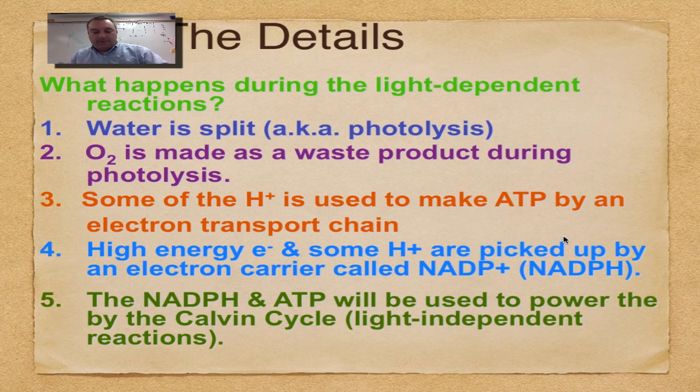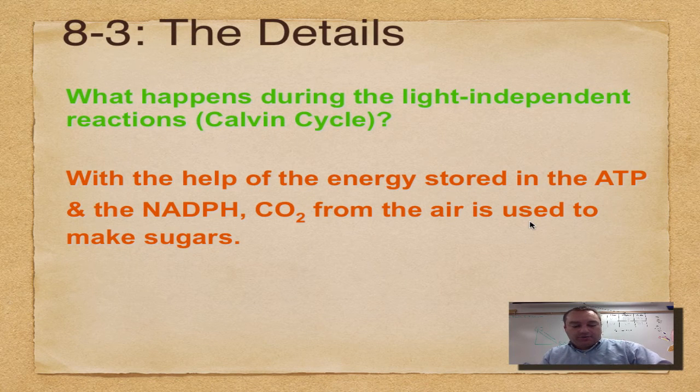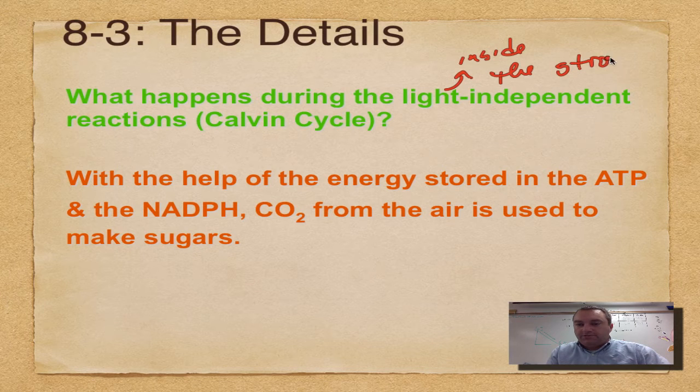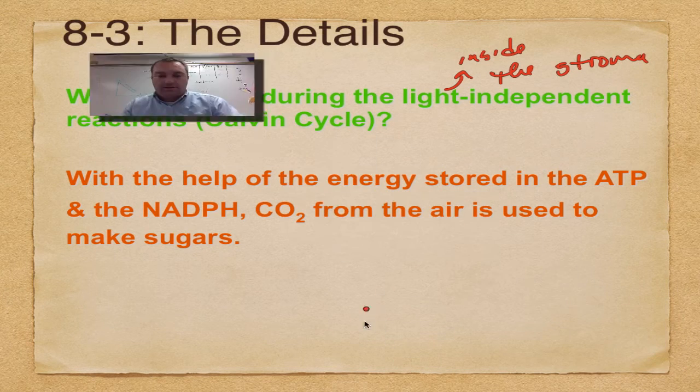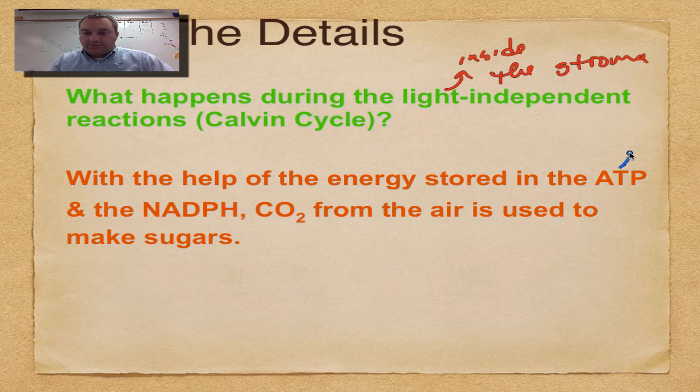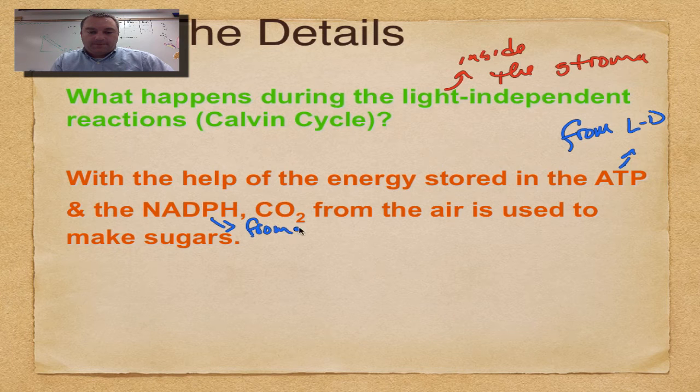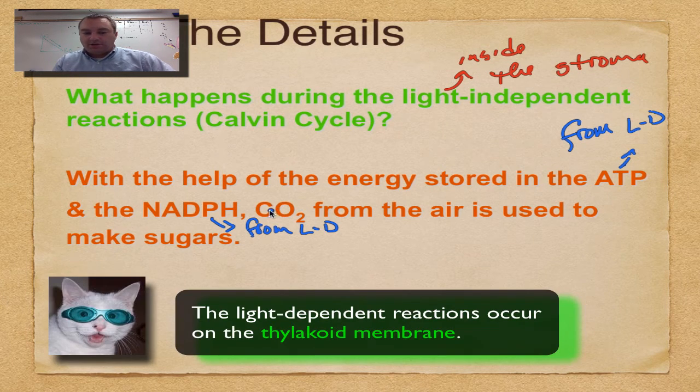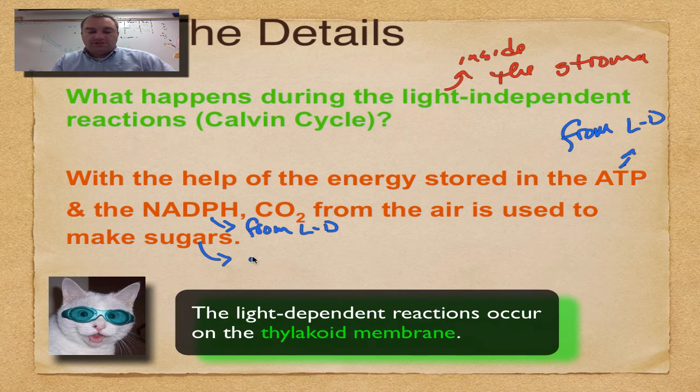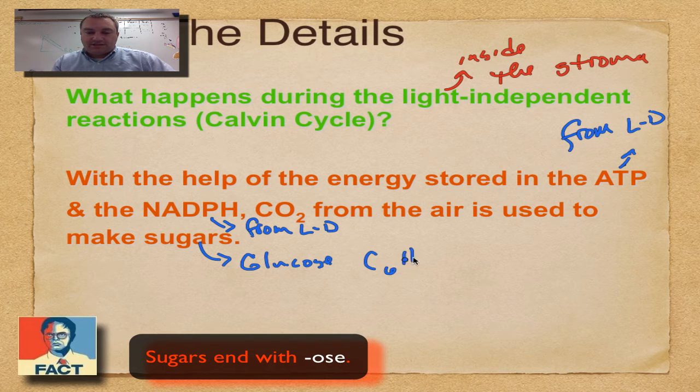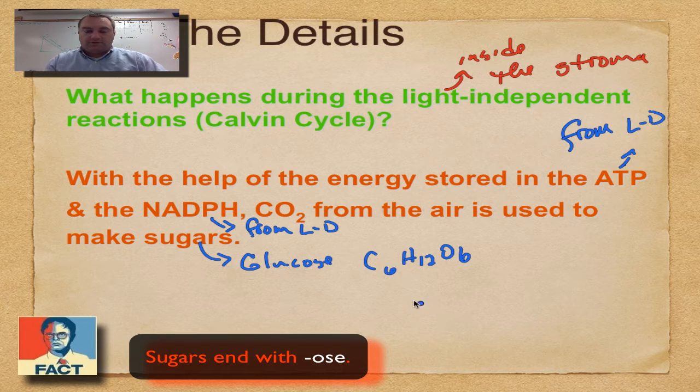Now let's learn about the Calvin cycle. Remember, the Calvin cycle occurs inside the stroma, which is part of the chloroplast. The energy from ATP and NADPH—which came from the light-dependent reactions—is used to turn carbon dioxide into sugars, specifically glucose, which has the chemical formula C₆H₁₂O₆. Like I said before, we're not going through all the details, but I have a picture to help make this make more sense.